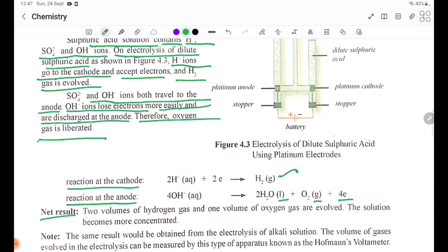Net result: two volumes of hydrogen gas and one volume of oxygen gas are evolved. The solution becomes more concentrated.